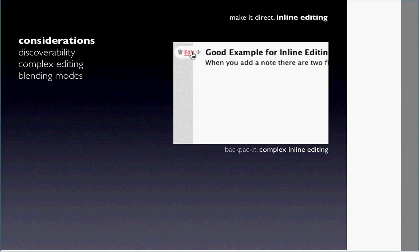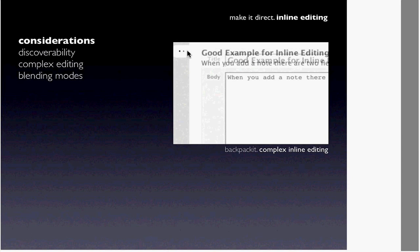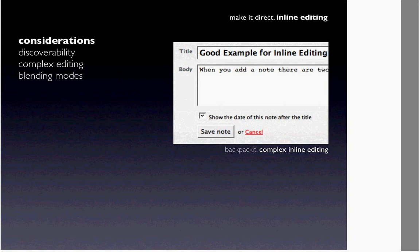Complex editing is one of those things you get into when it's not just a single field you want to edit. Here in 37 Signals' Backpack, when I hover over a title for my list, I get an edit link and a trash can, and also a drag icon. When I click the edit link, there's a cross-fading transition between read-only mode and edit mode, bringing in more complex editing with the title, body, and form — all brought into place without going to another page.